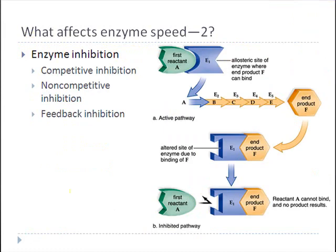Next we're going to talk about enzyme inhibition — when something is done to an enzyme to make it unable to perform its reaction. The easiest way to inactivate an enzyme is to attach something to it or detach something from it. Remember, any time you attach something to or detach something from an enzyme, the enzyme changes shape, and that impacts its ability to perform its reaction.